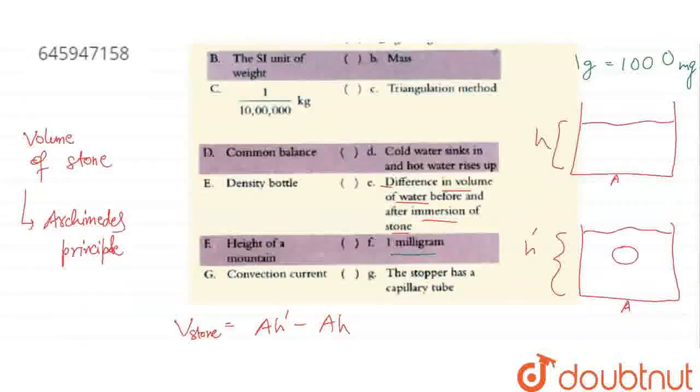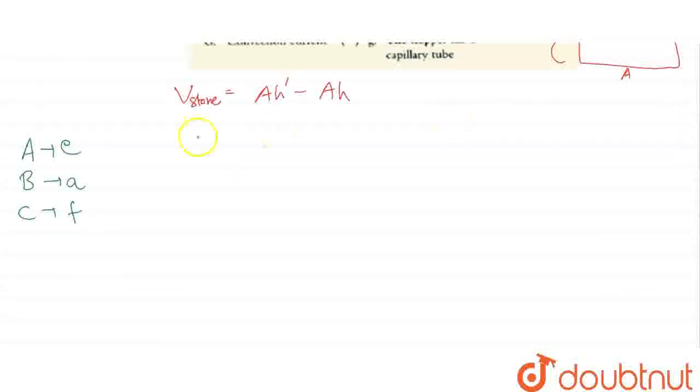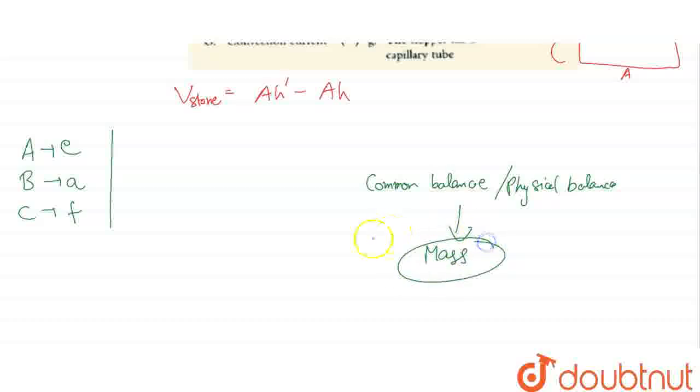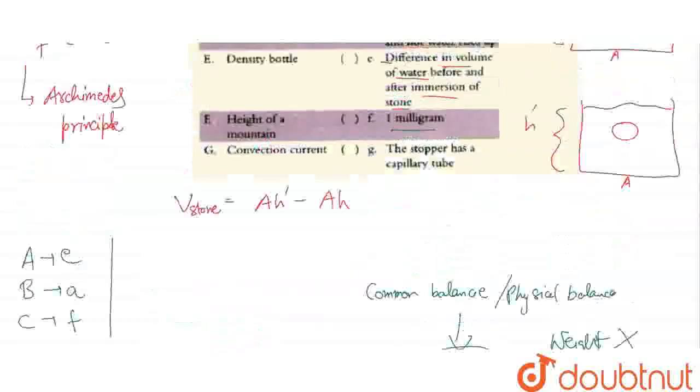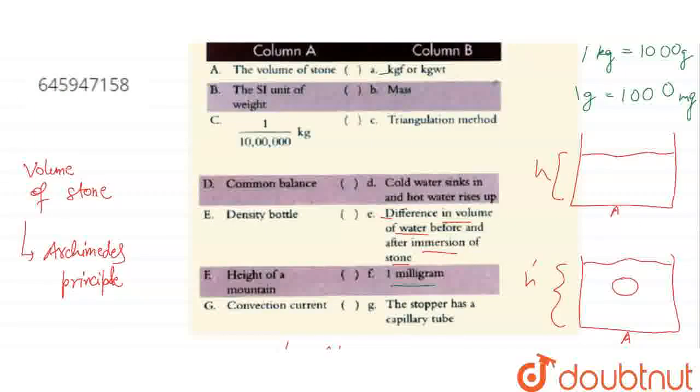Now remaining is D, common balance. What is common balance? Basically common balance is what we call physical balance. This is a device that finds mass of an object, not weight. For weight, spring balance is used. Spring balance tells weight, whereas common balance is another device that tells mass. That's why D's answer is B.